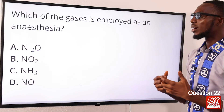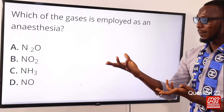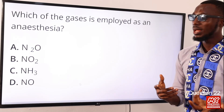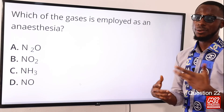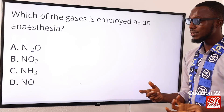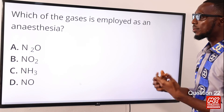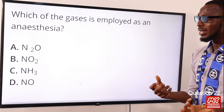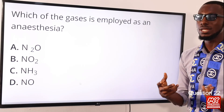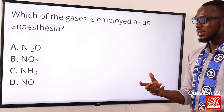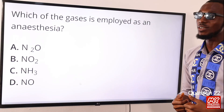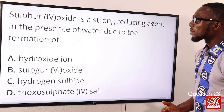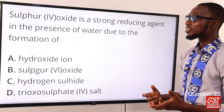Question twenty-two: which of the gases is employed as an anesthetic? Ammonia in option C is used as a solvent in laundry to remove grease and oil stains, and to soften temporarily hard water. Nitrogen monoxide (N₂O) in option A is used as a mild anesthetic in minor surgeries like dental surgery. So the correct option is option A.